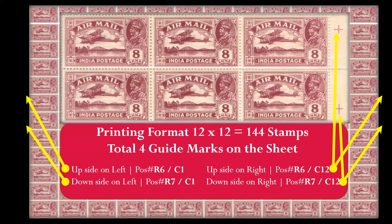The important thing I found when studying these guide marks: the one on row six, coming from the top side, falls on the top position within the margin area. The one on row seven falls on the bottom side within the margin area. So even with just one stamp, you can determine which particular row position it falls on.